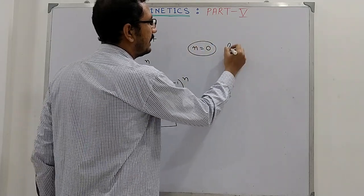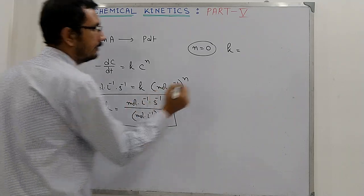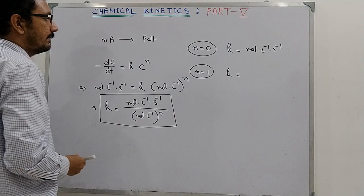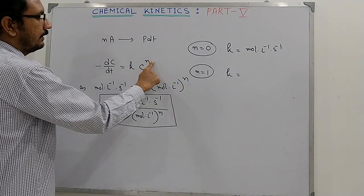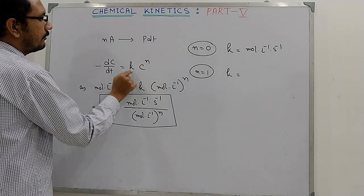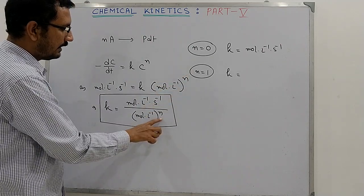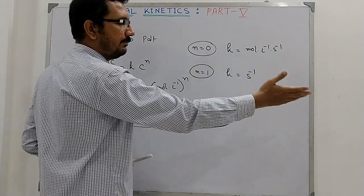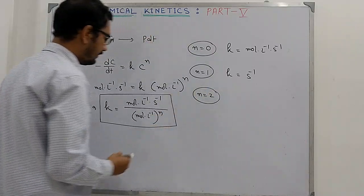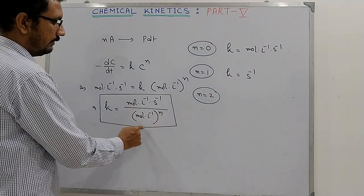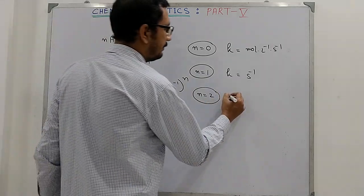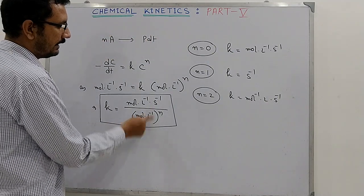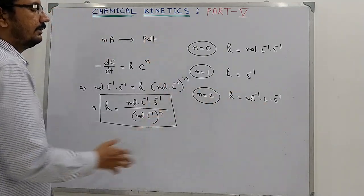For a zero order reaction, the unit will be mol per liter per second. For first order, rate equals K times C to the power 1, so (mol/L)/s divided by (mol/L) to the power 1 — the mol/L cancels and we are left with only s⁻¹ (second inverse, or minute inverse, or hour inverse). For a second order reaction, n equals 2, so one mol/L cancels and one remains in the denominator; when brought to the numerator it gives mol⁻¹ L s⁻¹. These are the units of the rate constant for different orders.